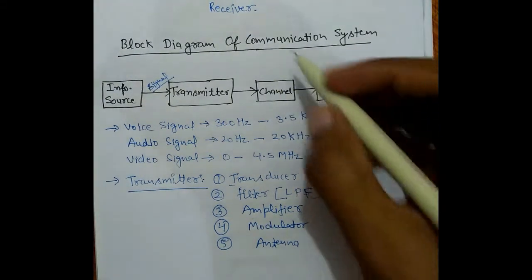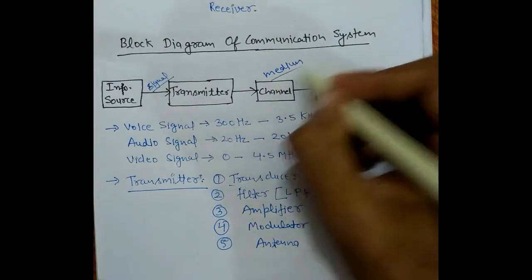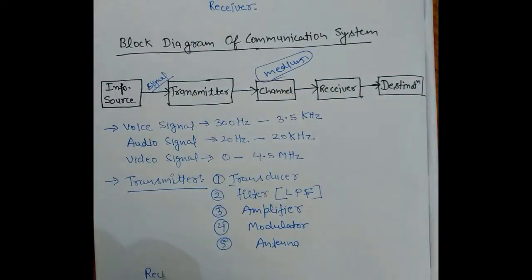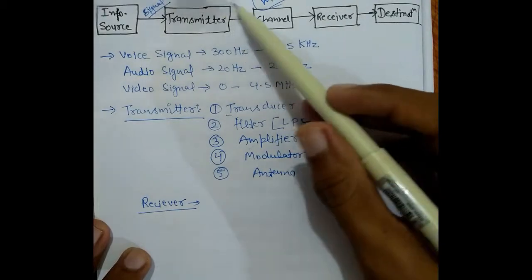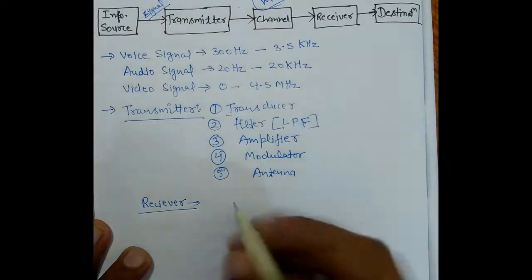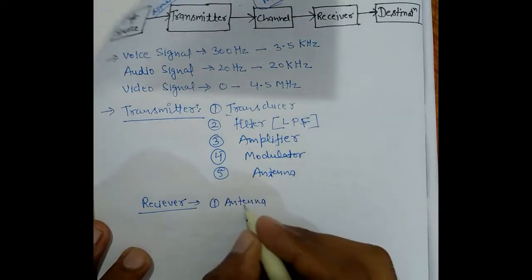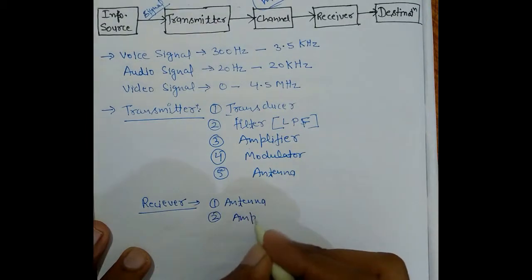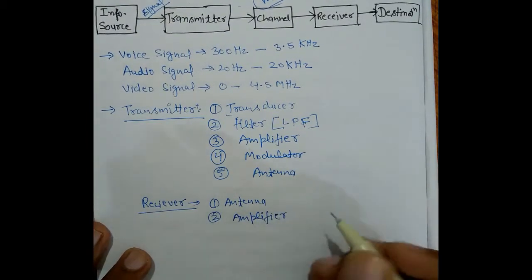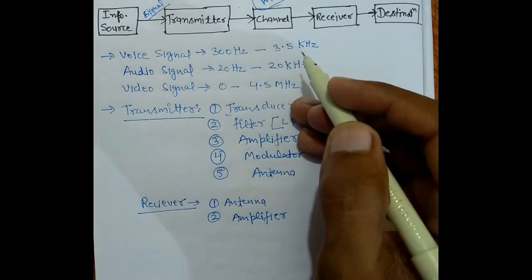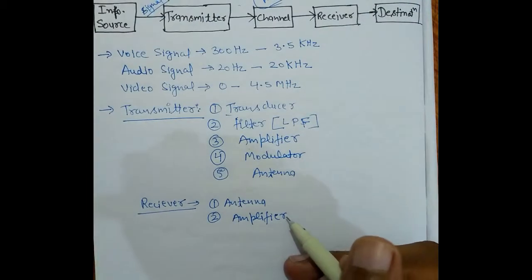Then comes the channel — the channel is the medium through which the message travels. Then comes the receiver part. The receiver receives the signal that was transmitted by the transmitter. First, the receiver uses an antenna to catch the signal. After the antenna, we use an amplifier, because when the message signal travels through the channel, there is attenuation and the power is reduced, so we amplify it.